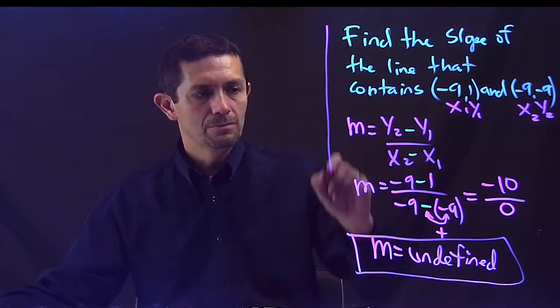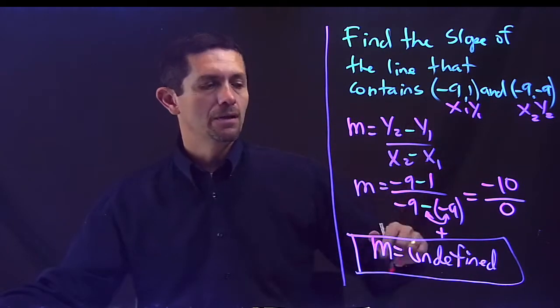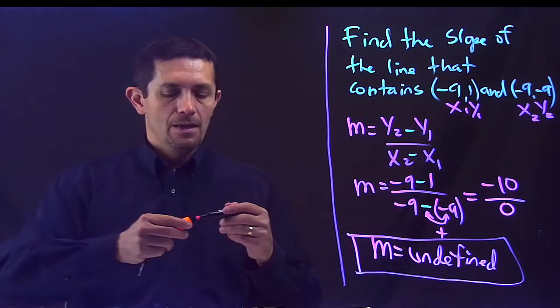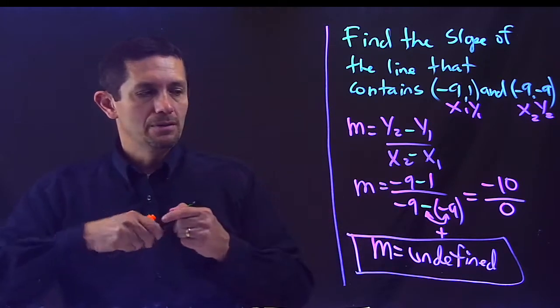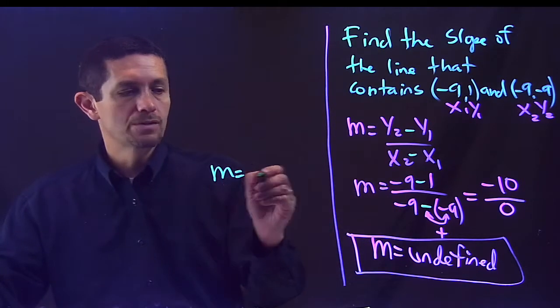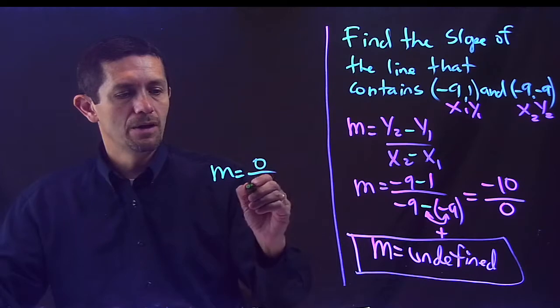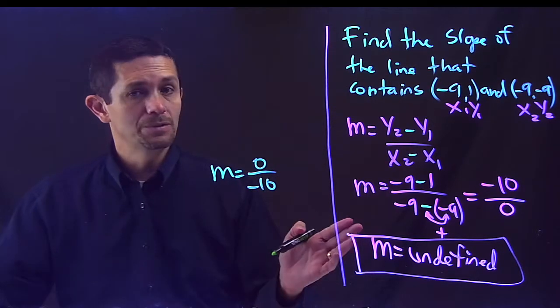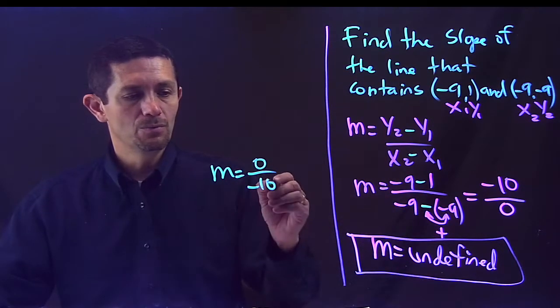What is the other option? I'm done with this problem. Let's pretend the other case. Let's pretend that all those values were the opposite, and that my slope was 0 on the top and negative 10 on the bottom. Let's pretend that problem is done and it's undefined. This one is a new problem.